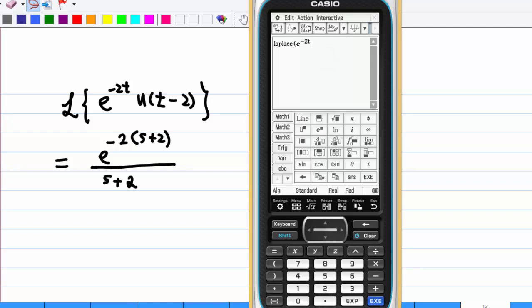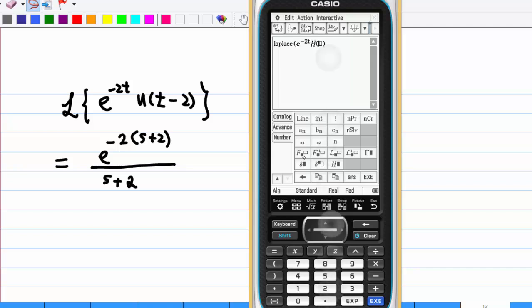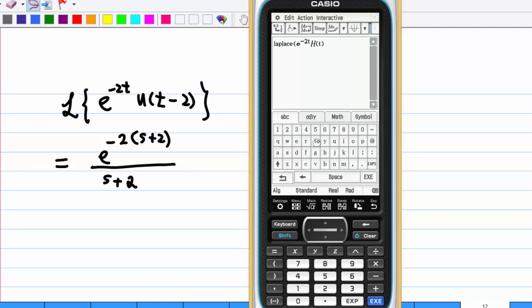Then I am going to use advanced, Heaviside unit step function. I am going to enter alphabet again, t minus 2.